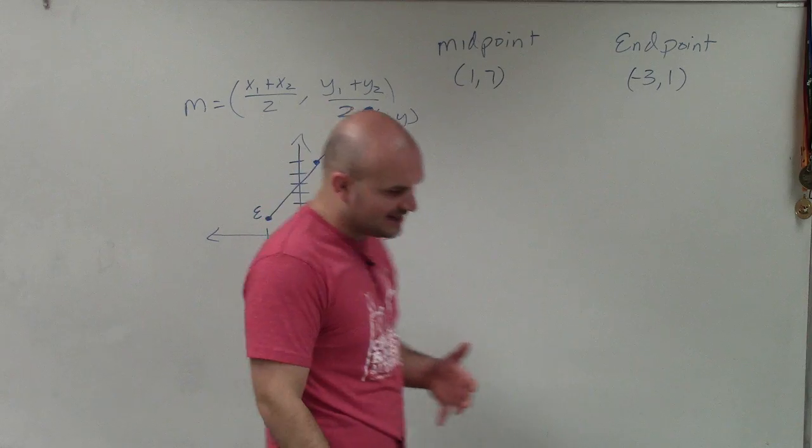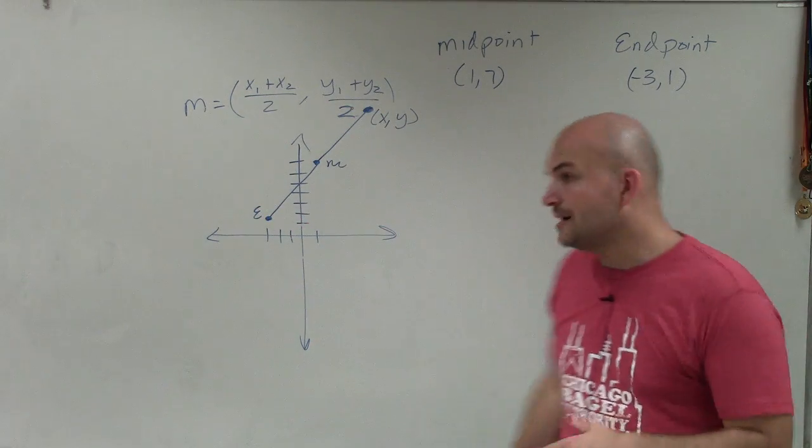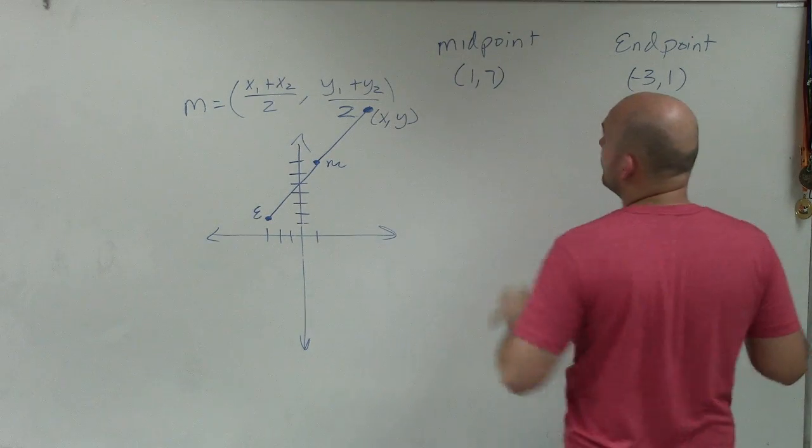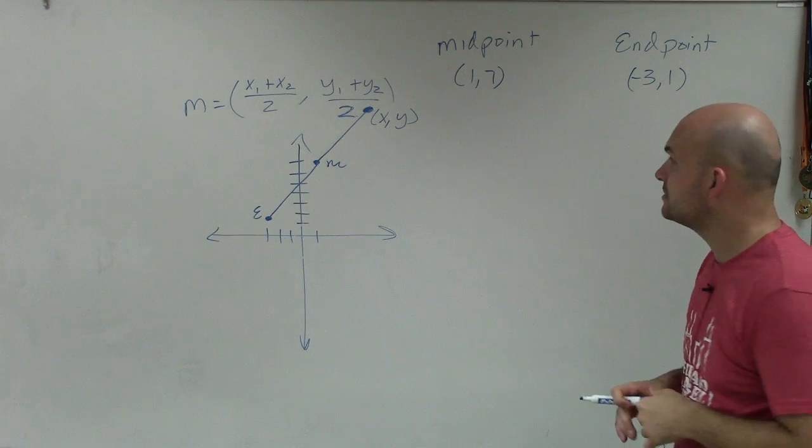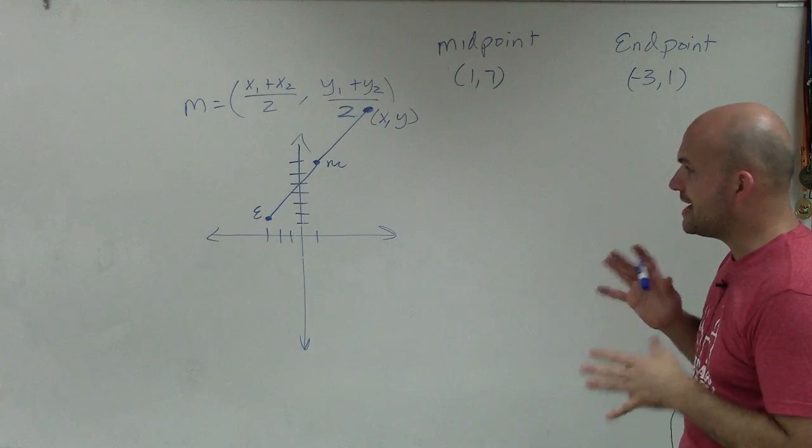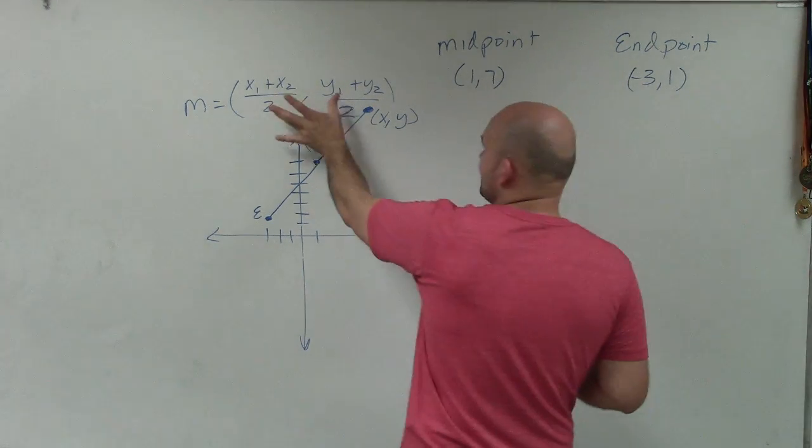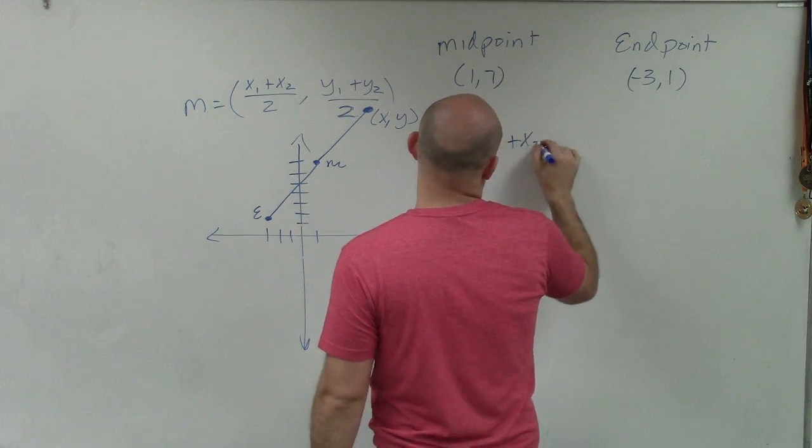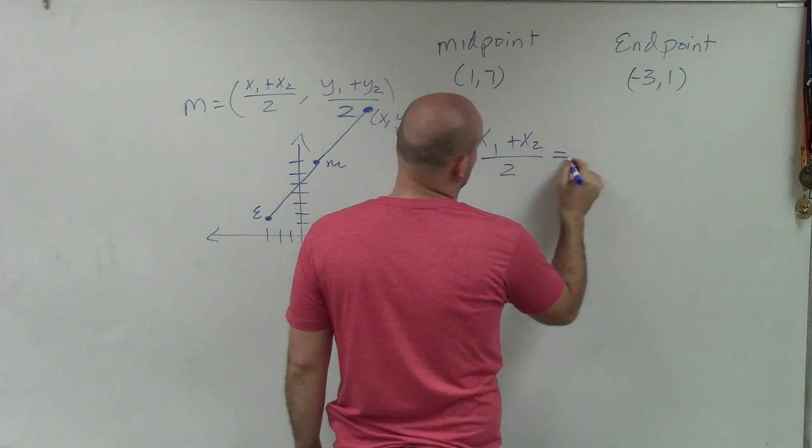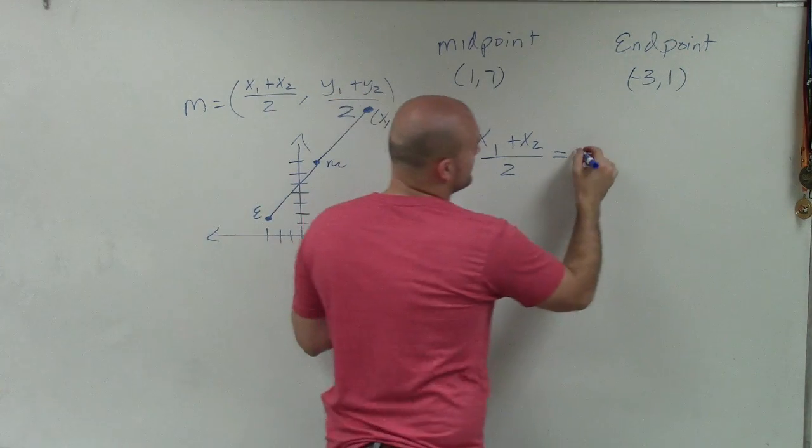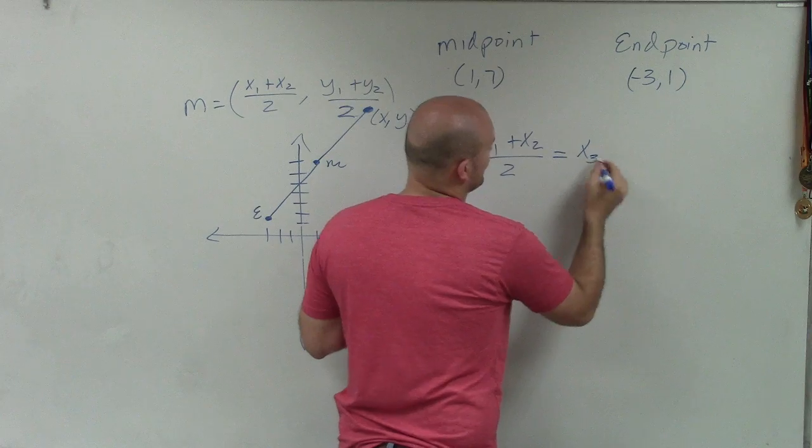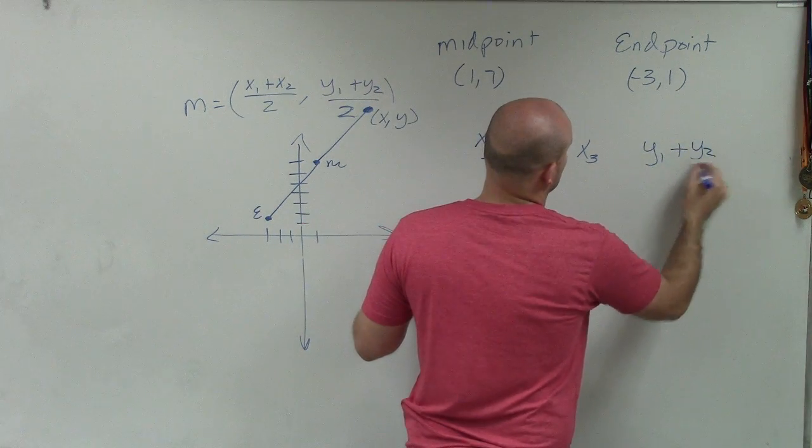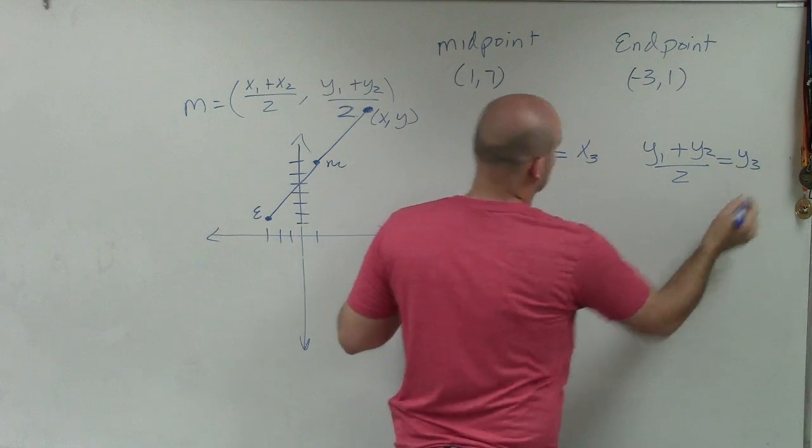So the only thing we can say is, we know the midpoint, but we do not know what the x and the y value is for the endpoint. So what I'm going to do is I'm going to take my midpoint formula and I'm going to break it up. So I'm going to say x1 plus x2 divided by 2 equals the midpoint, the x coordinate. And let's do y1 plus y2 divided by 2 equals y coordinate.